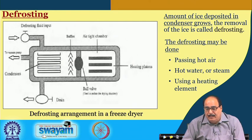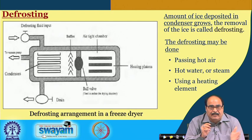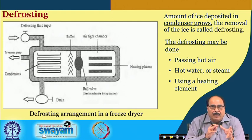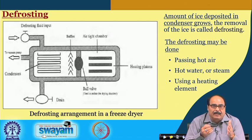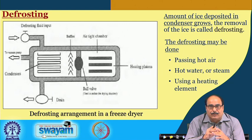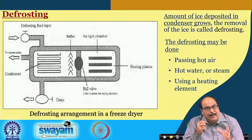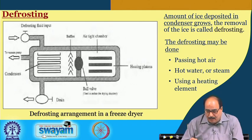Defrosting refers to the removal of ice deposited in the condenser, which grows with the progress of the freeze drying process and must be continuously removed. Proper defrosting is very important for process efficiency and process economics. If the ice is not defrosted regularly and deposits inside the condenser system, the rate of sublimation will be adversely affected. Different ways for defrosting include passing hot air, hot water, steam, or using a heating element, which converts the ice back into liquid water and allows it to flow out of the condenser.